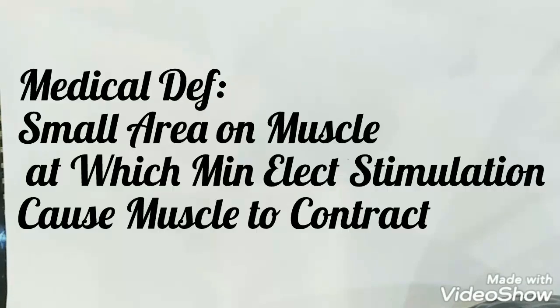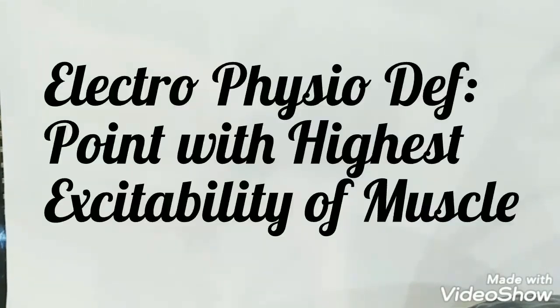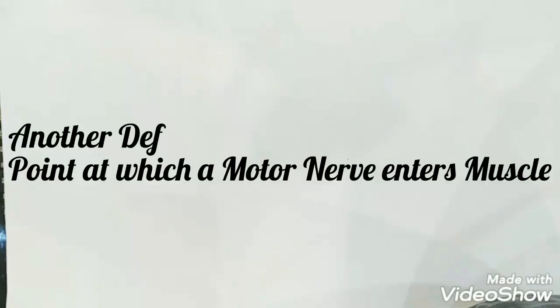Talking about the medical definition, a motor point is a small area on a muscle at which a minimum amount of electrical stimulation will cause a muscle to contract. Talking about the electrophysiological definition, a motor point is that point of a muscle with the highest excitability. A motor point can also be defined as the point at which a motor nerve enters the muscle.